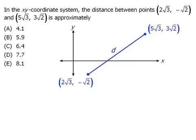From here, we can draw horizontal and vertical lines to create a right triangle. We can determine that the base has length 3 root 3, and the triangle has height 4 root 2.